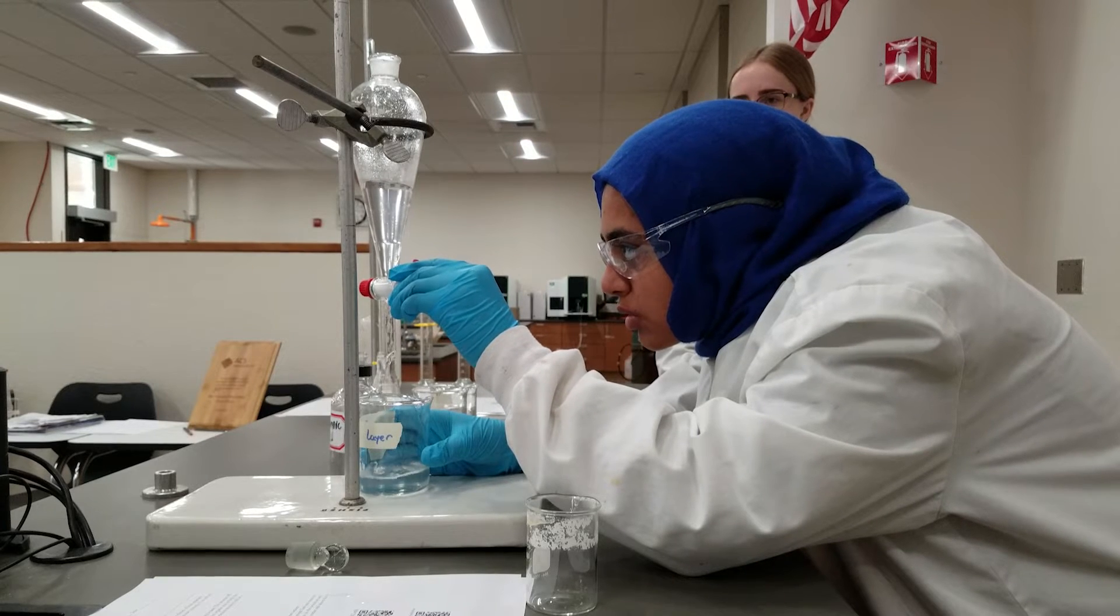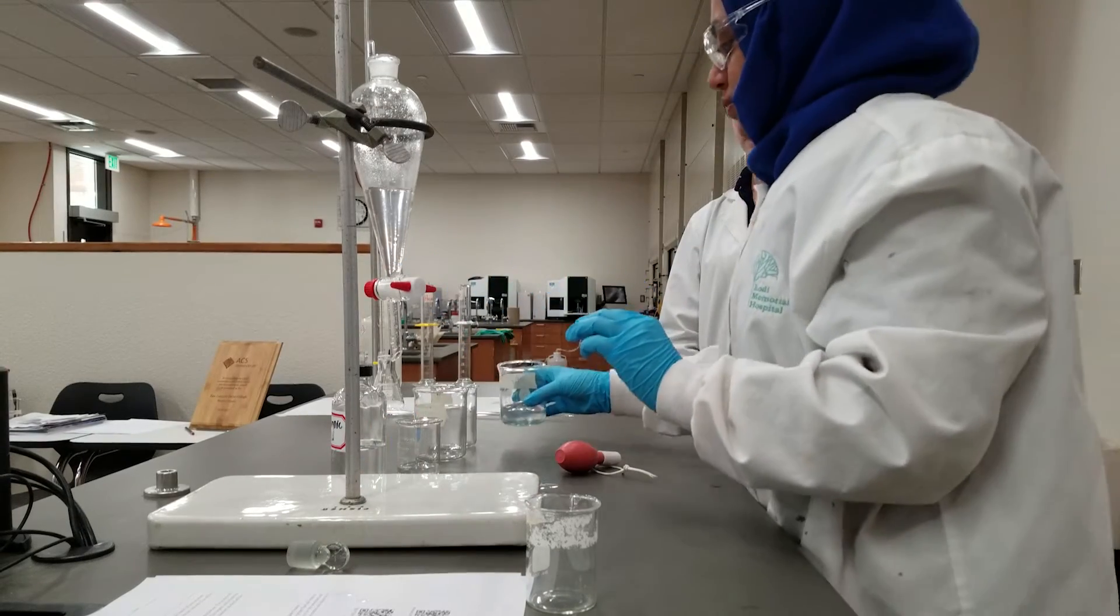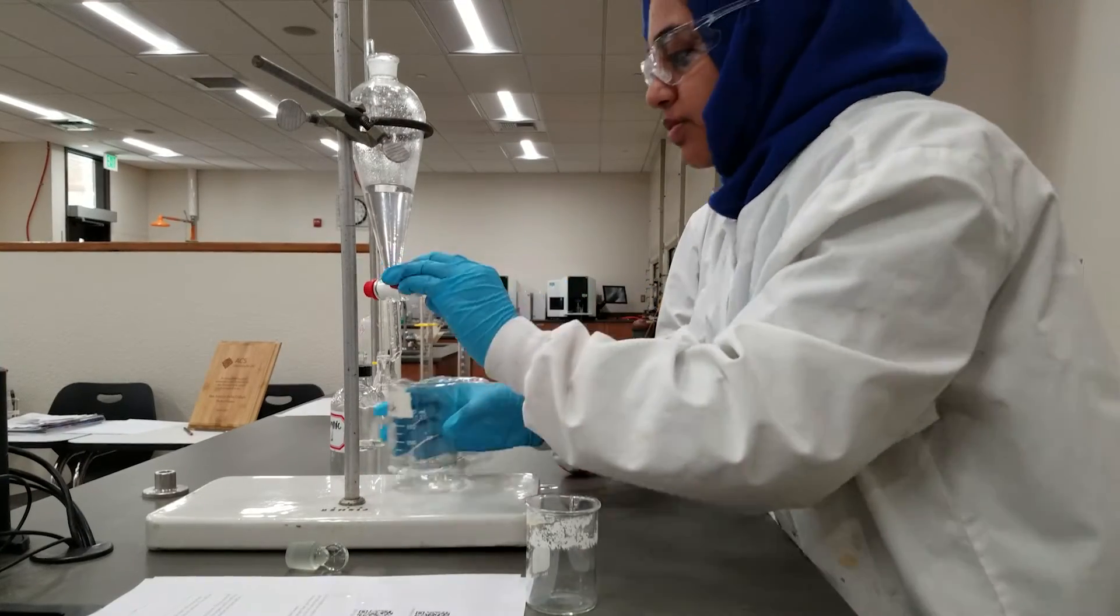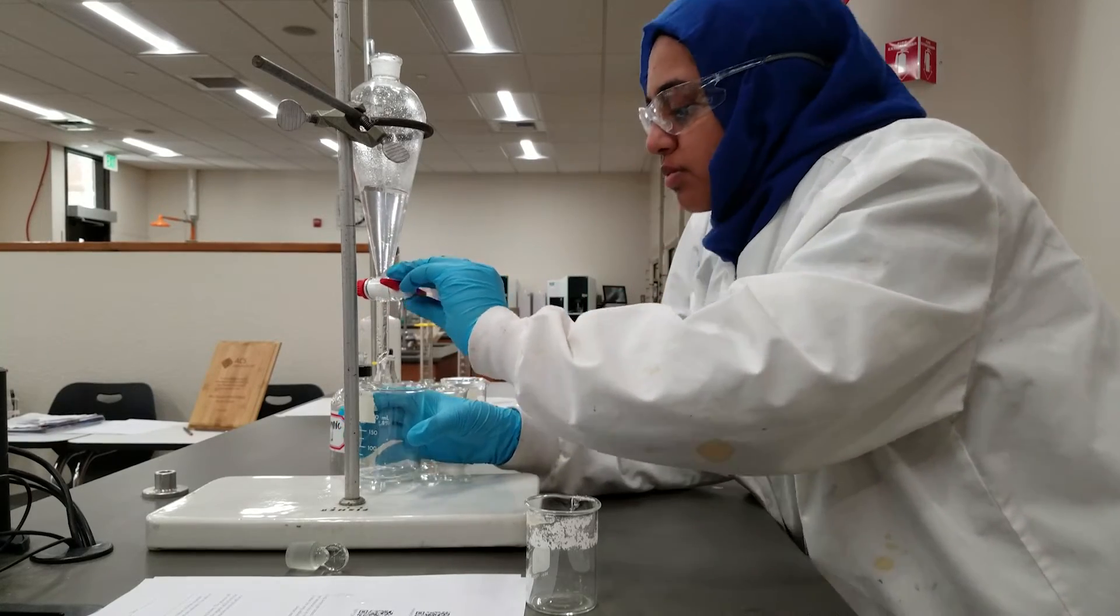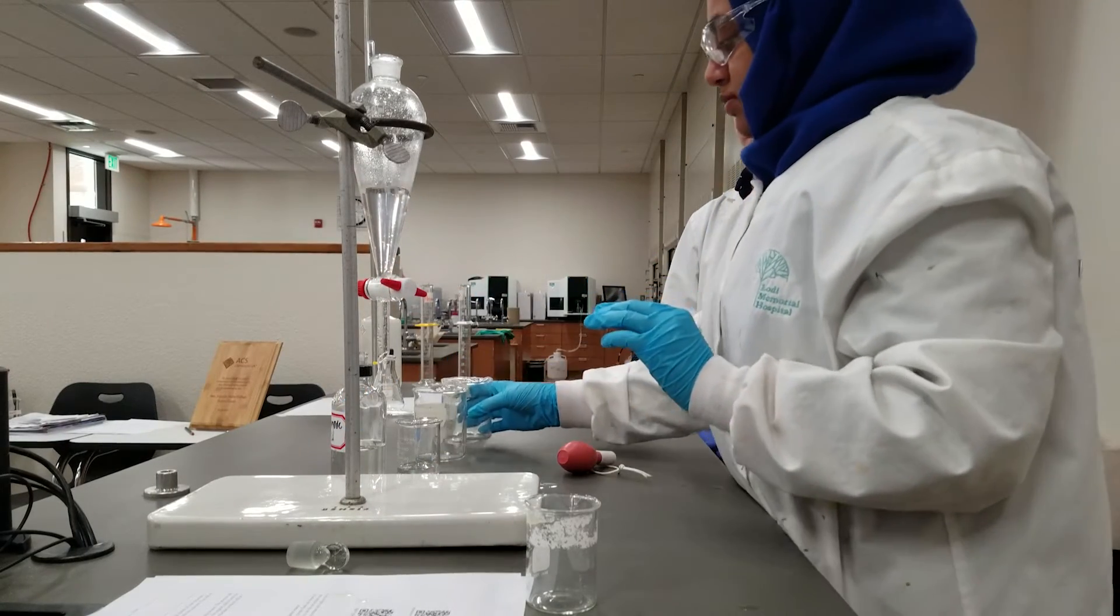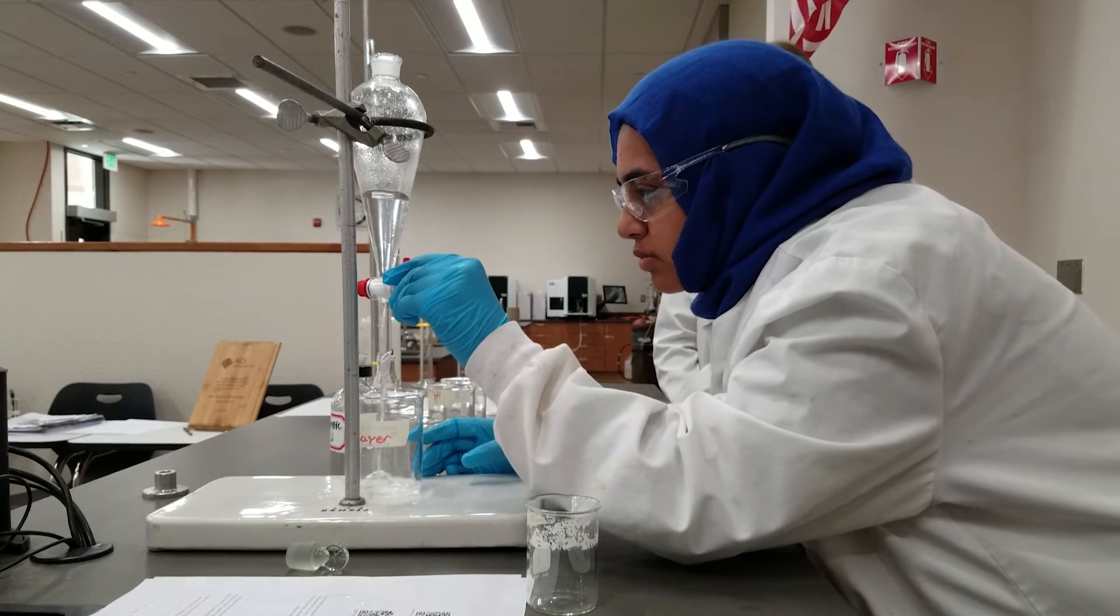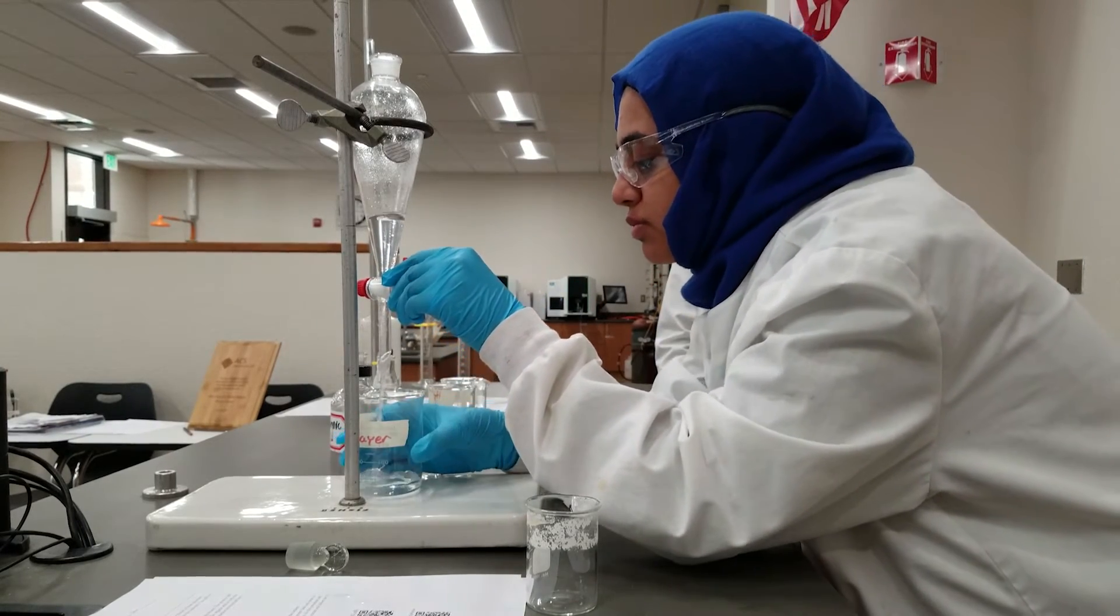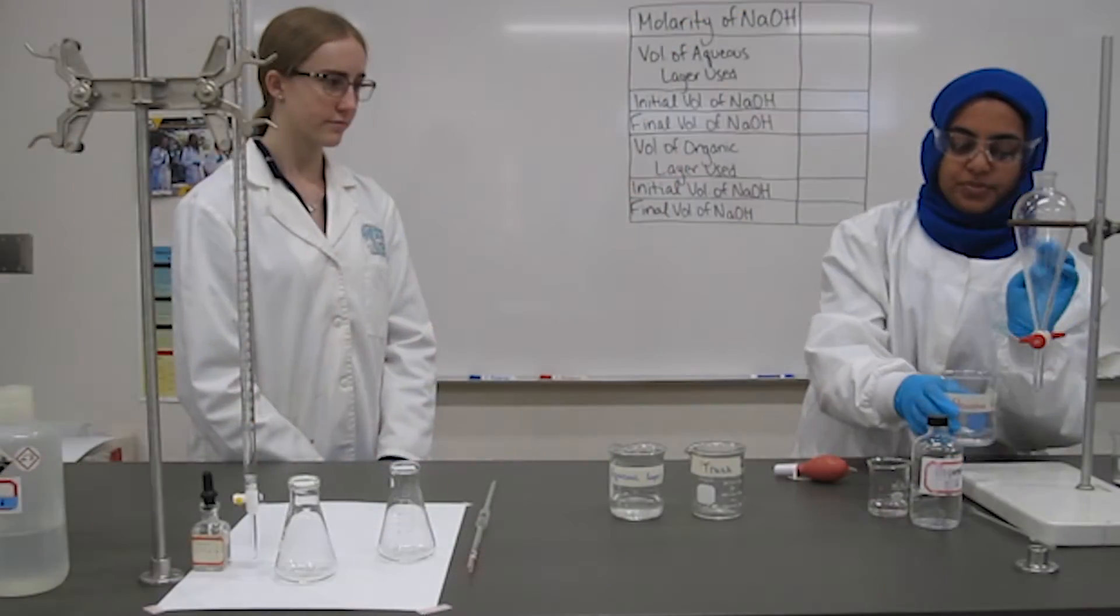We'll stop at the interface. We'll have a junk beaker which is going to be a mixture, and then the final layer would be the hexane layer. We're going to test both of these layers for propanoic acid.